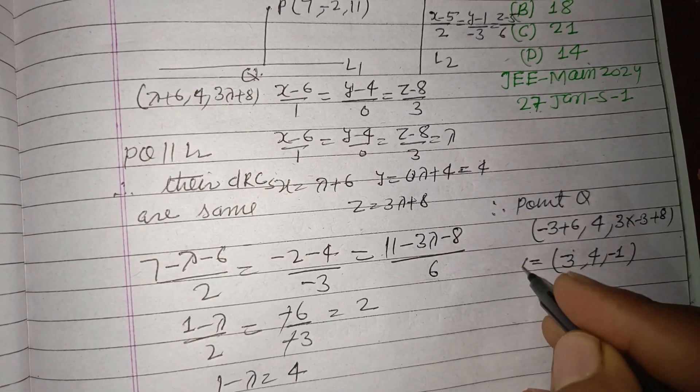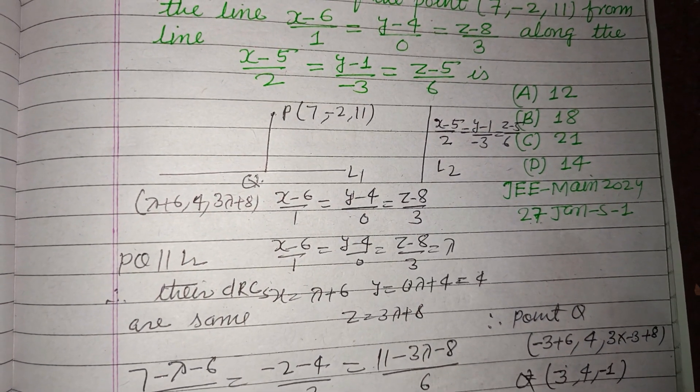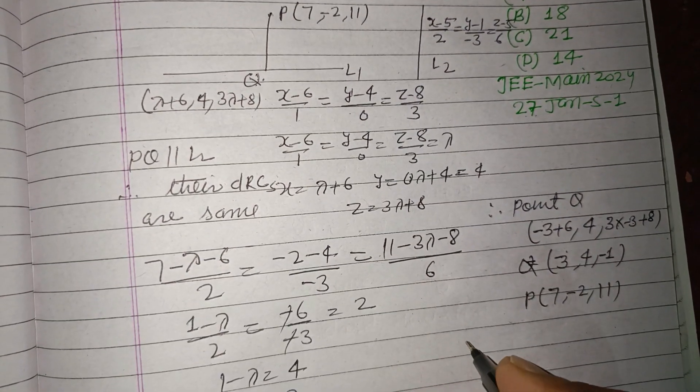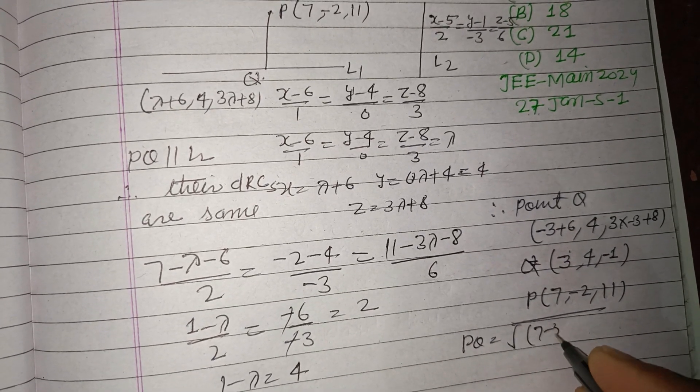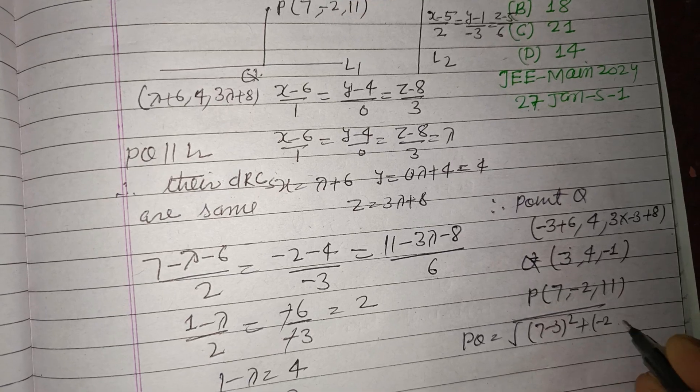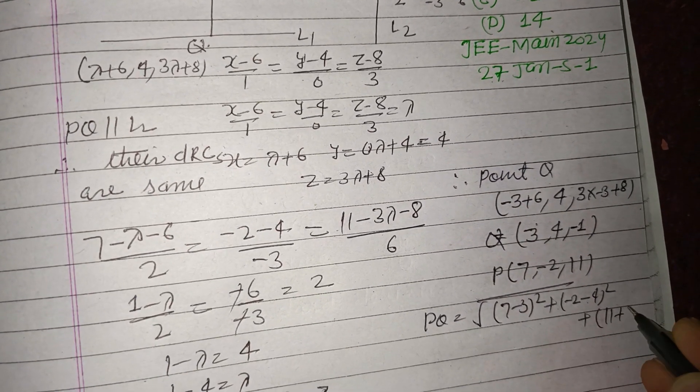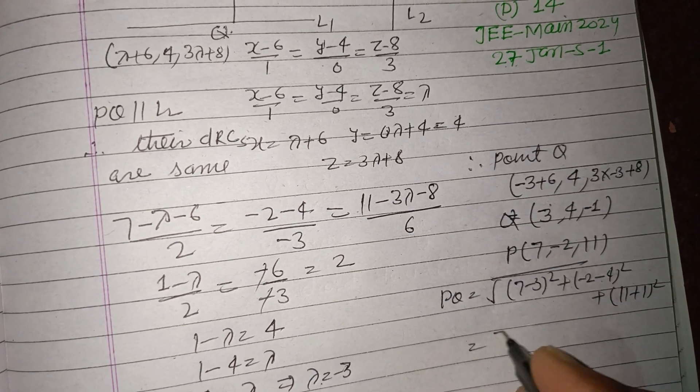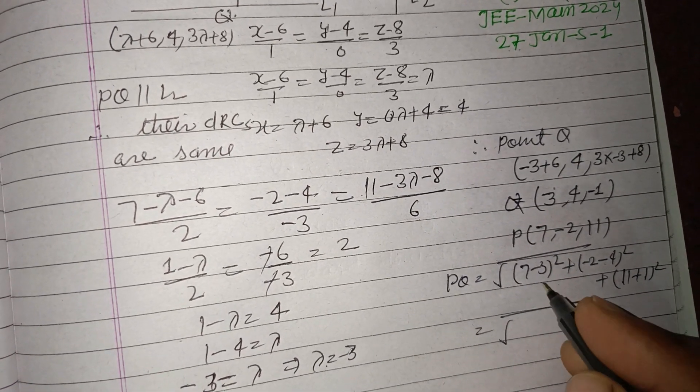So this is Q, and P is already given as (7, -2, 11). So PQ = √[(7-3)² + (-2-4)² + (11-(-1))²], which equals √[(4)² + (-6)² + (12)²]. This is